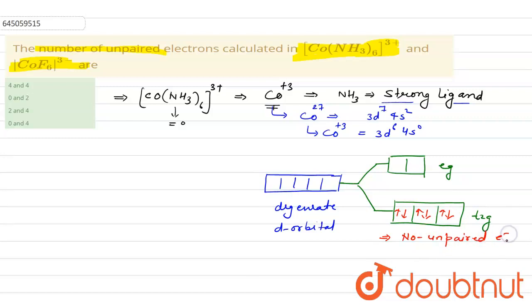Now let's see the second complex. The second complex is [CoF6]^3-. We know very well that fluorine shows always -1 oxidation state. Now let's find out the oxidation state of cobalt: x - 6 = -3, so x will be equal to +3. So cobalt here is also in +3 oxidation state. Electronic configuration will be the same, that is 3d^6 4s^0.